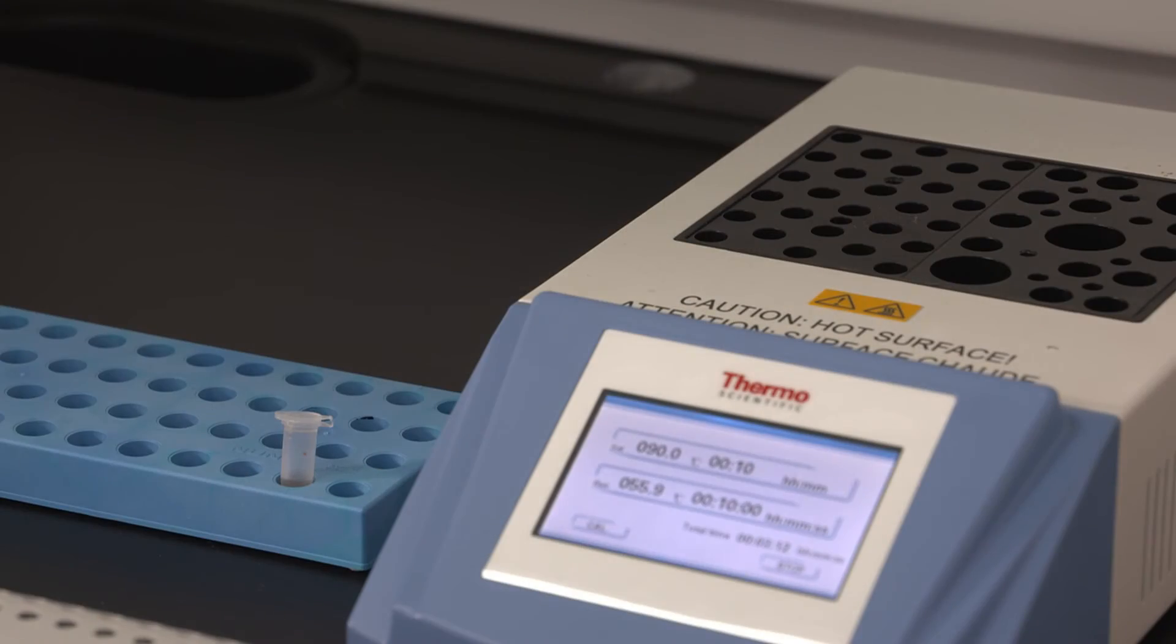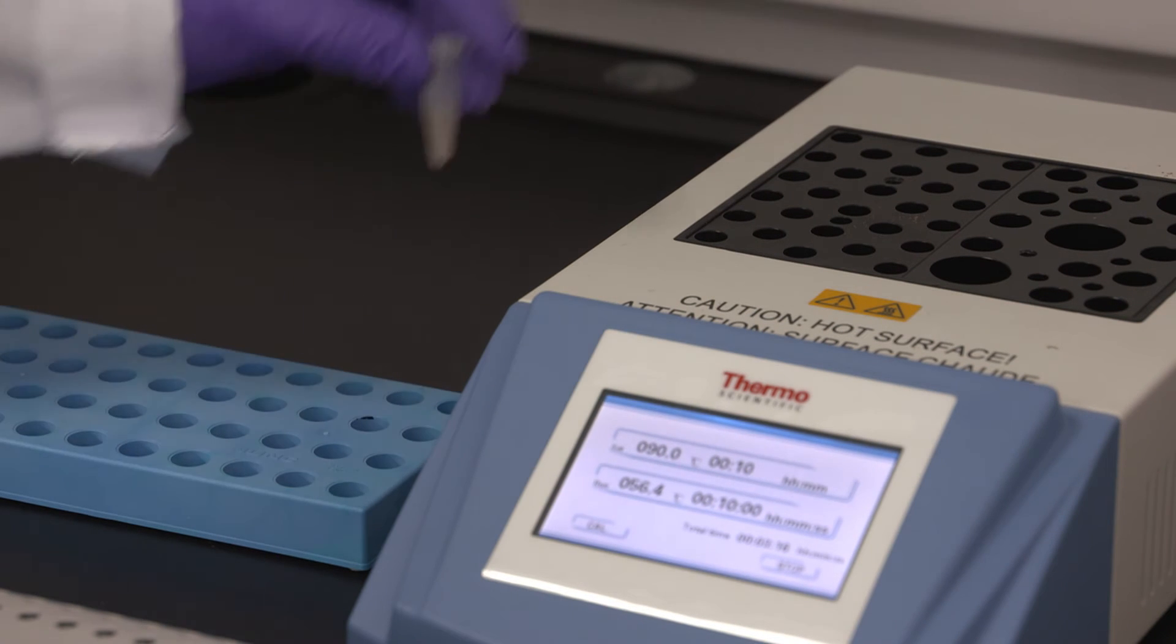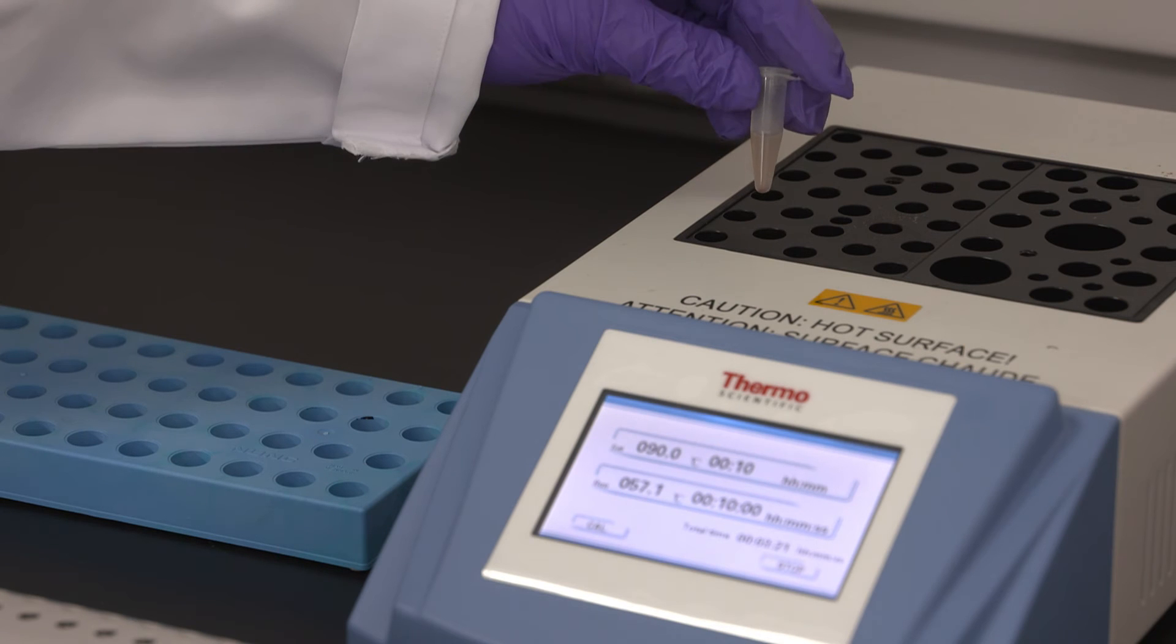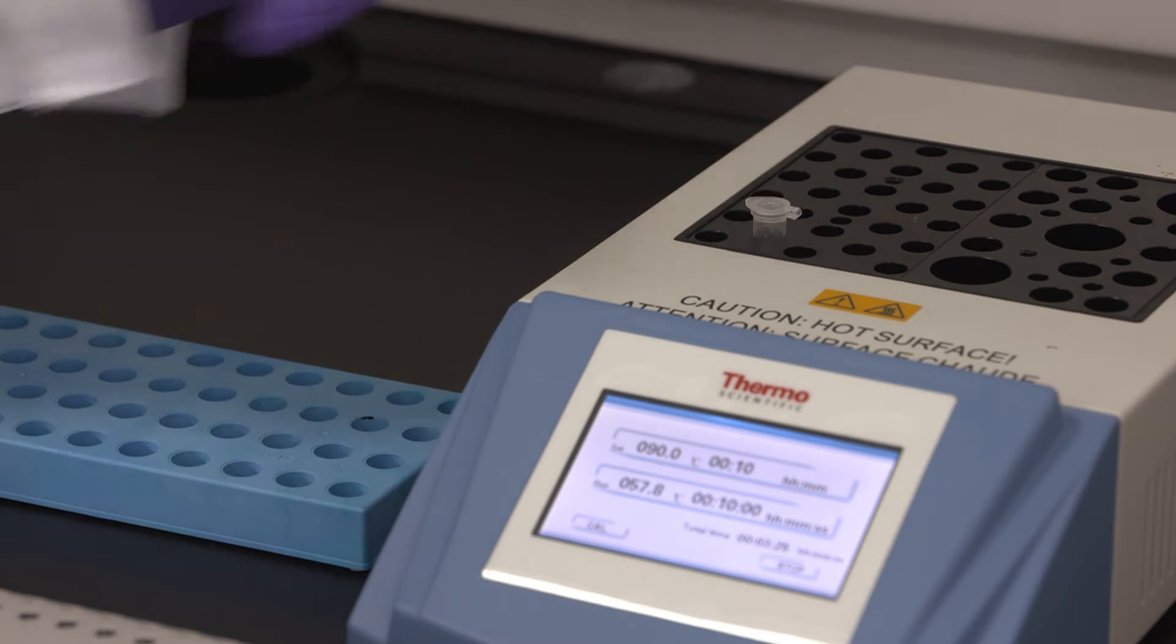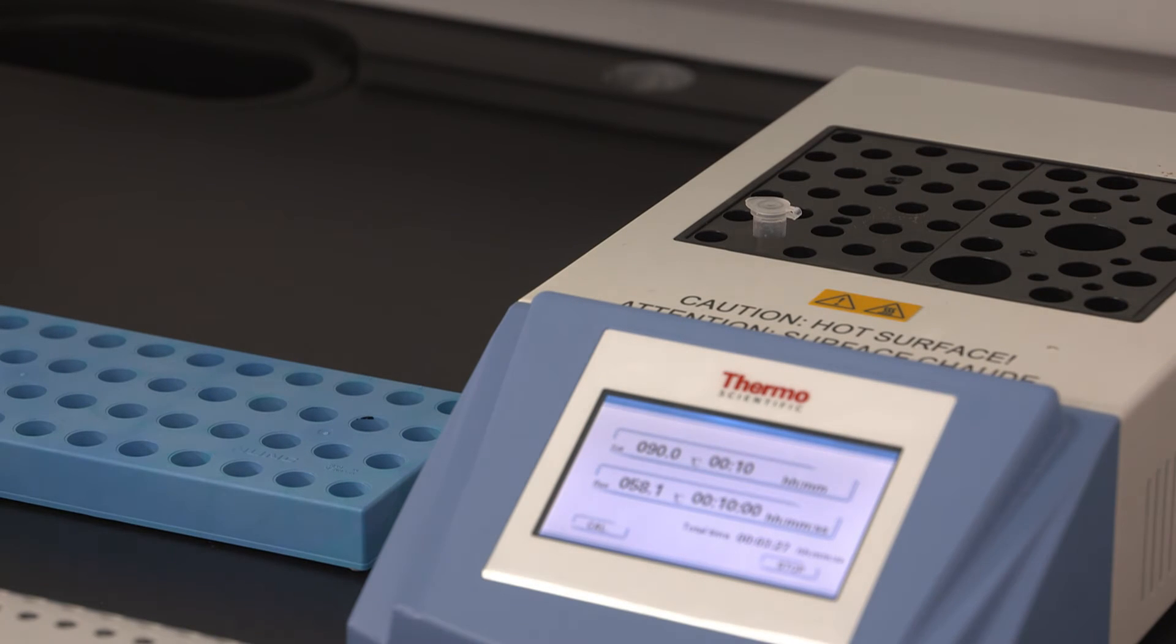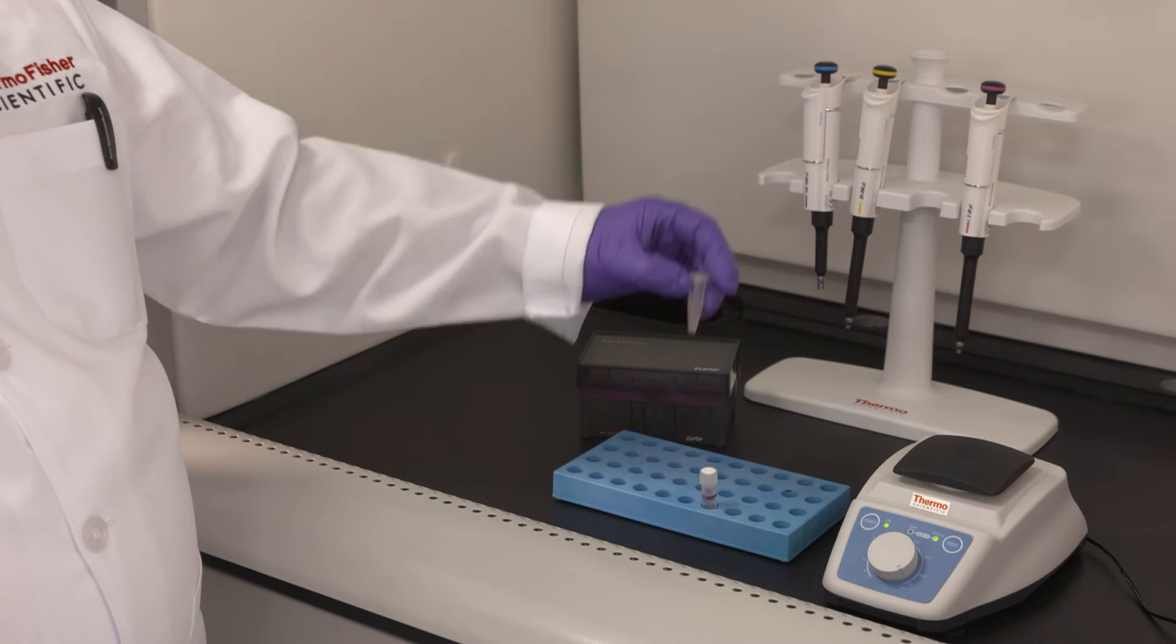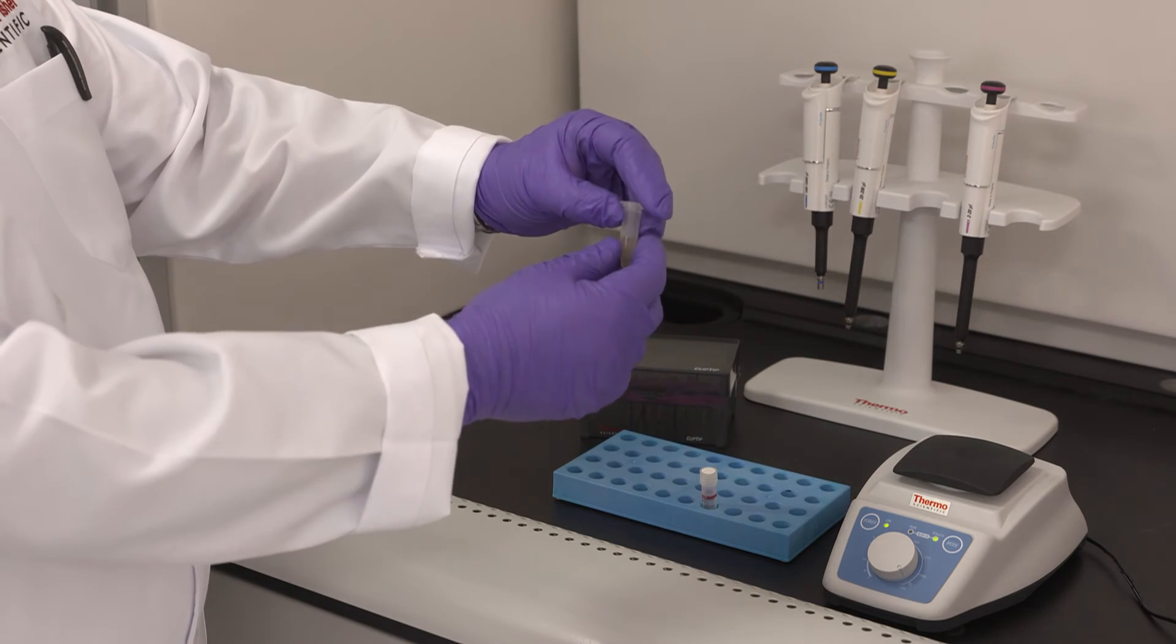Now we have dissolved the pellet in our sample. We will denature the protein by heat and the heater is set at 90 degrees. Normally it's going to take between 5 to 10 minutes. You will see a change in the nature of the solution. You need to remove the sample before it's boiling. Now we are ready to digest the protein in the mixture.